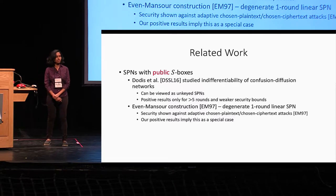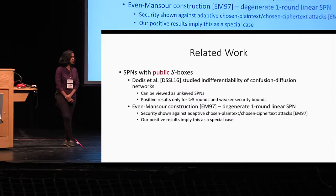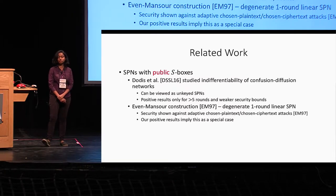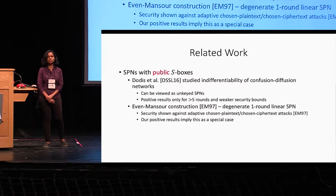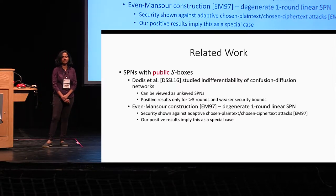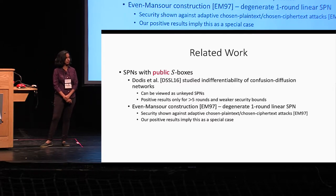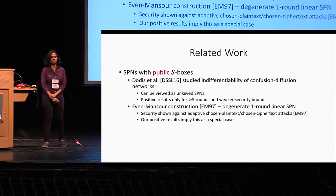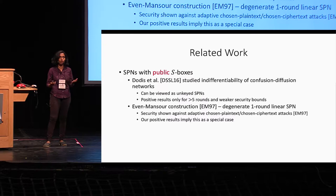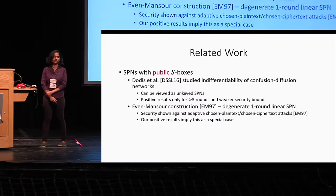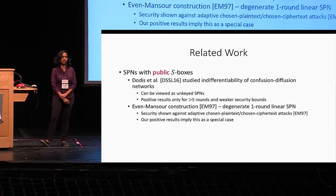SPNs with public S-boxes are, in fact, how block ciphers are typically built. There has been some work here as well. Dodis, Stamps, Steinberger, and Liu studied indifferentiability of confusion-diffusion networks — indifferentiability being a stronger notion of security — and confusion-diffusion networks can be viewed as unkeyed SPNs. They show results only for SPNs of greater than five rounds, and given the stronger notion, they could only prove weak security bounds. The well-known Even-Mansour construction can also be considered a degenerate one-round SPN. The positive results in this setting are actually implied by a special case of our results.